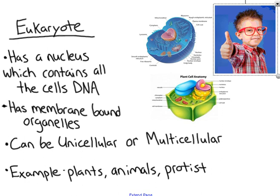Another big difference is that eukaryotic cells have membrane-bound organelles — things like the Golgi apparatus, mitochondria, and lysosomes. These are complex structures found within the cell that help it perform functions. Because of this, eukaryotic cells are typically more complex and more specialized.